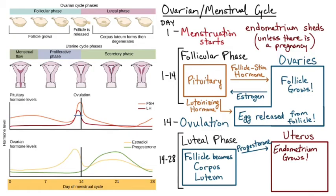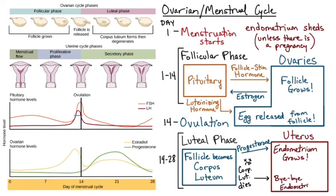Eventually, if there is no pregnancy, the corpus luteum will die off and degenerate. When the corpus luteum dies it stops releasing progesterone, and without that progesterone signal the uterus will no longer maintain the endometrium — it will shed, triggering menstruation. At that point we're approaching day 28, and we're back to day one where the cycle begins again.